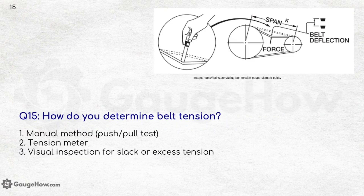How do you determine belt tension? You can use the manual method — a push or pull test — use a tension meter, or use visual inspection for slack or excess tension.